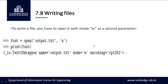The last topic in this chapter is writing files. To write a file, you have to open it in write mode 'w' as the second parameter to the open() function. In this example, 'output.txt' is the file to be opened and modified, and we use 'w' (write mode) as the second parameter. Thank you.